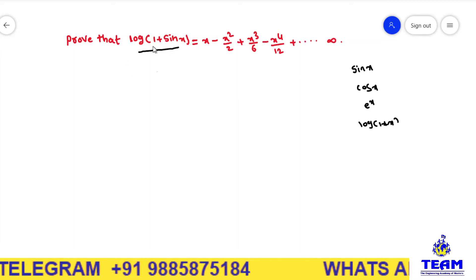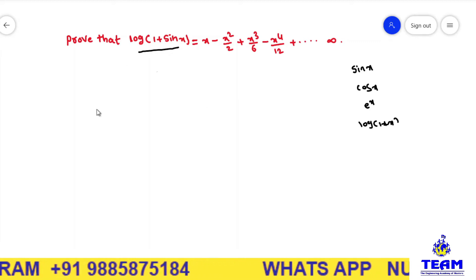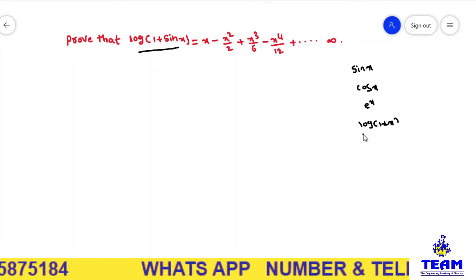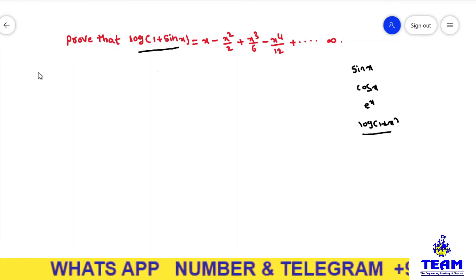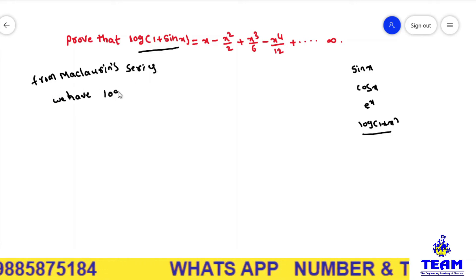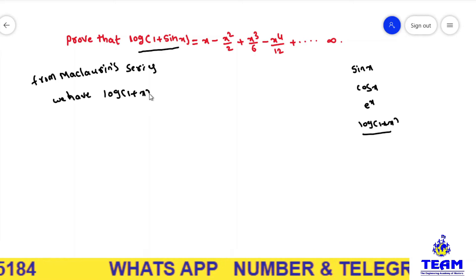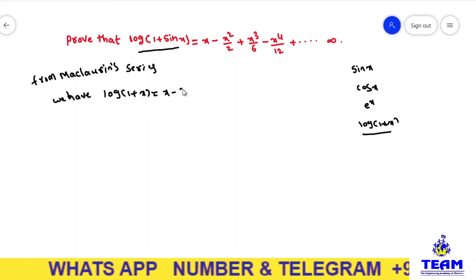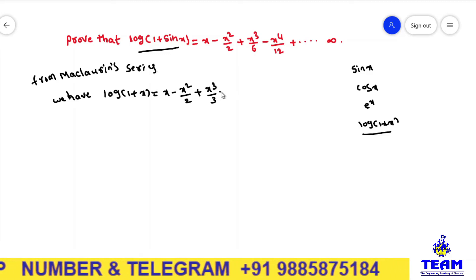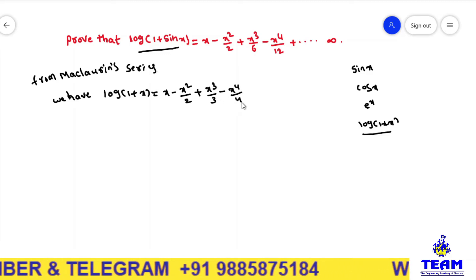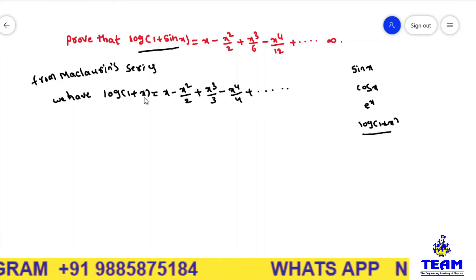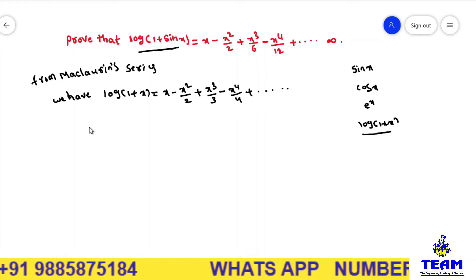Here we have a function of a function, so first I am writing the expansion of log of 1 plus x from the Maclaurin series. From the Maclaurin series, the expansion of log of 1 plus x is equal to x minus x squared by 2 plus x cubed by 3 minus x to the power of 4 by 4 plus so on.